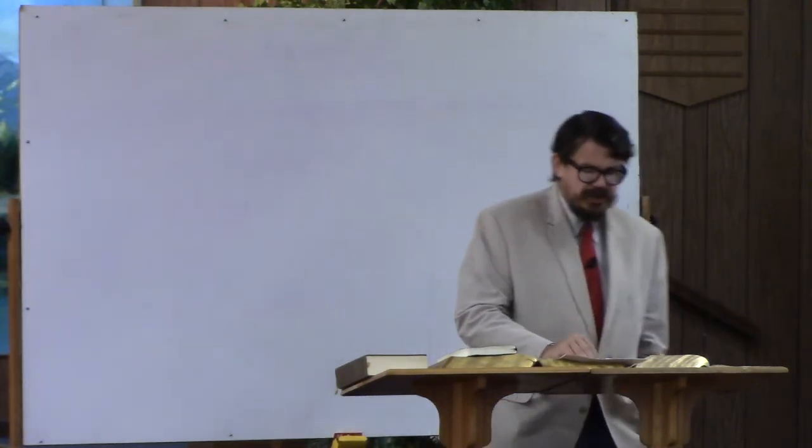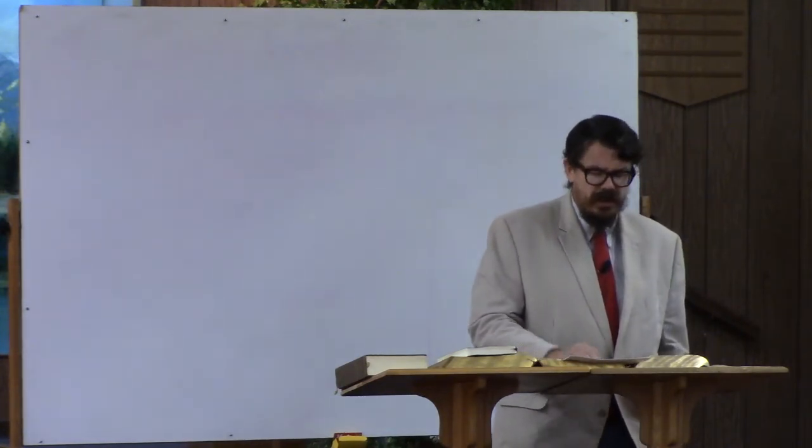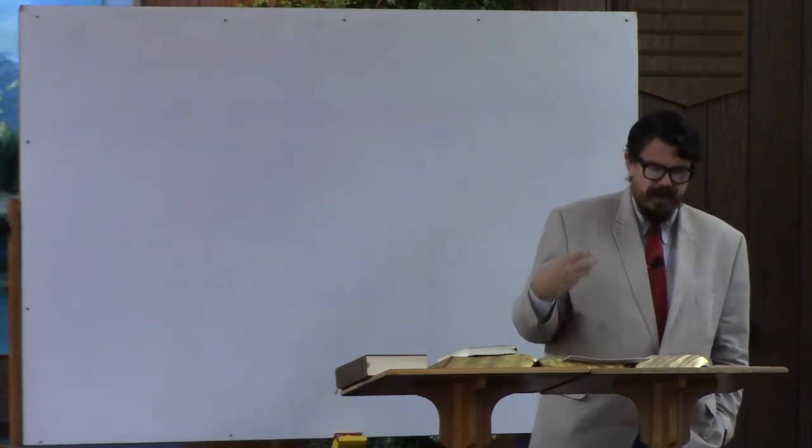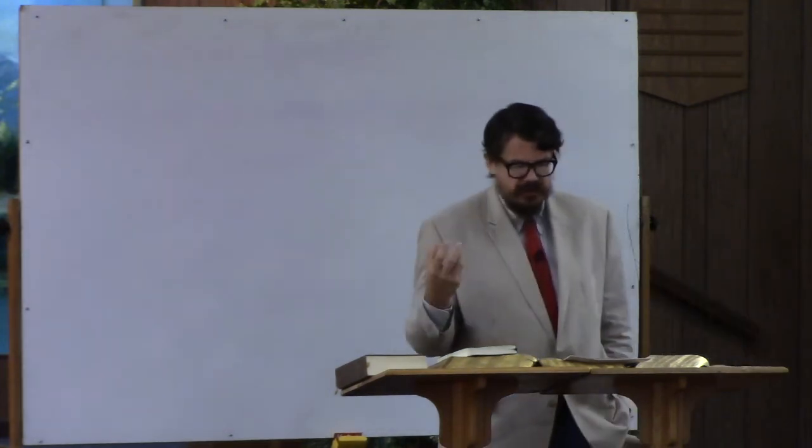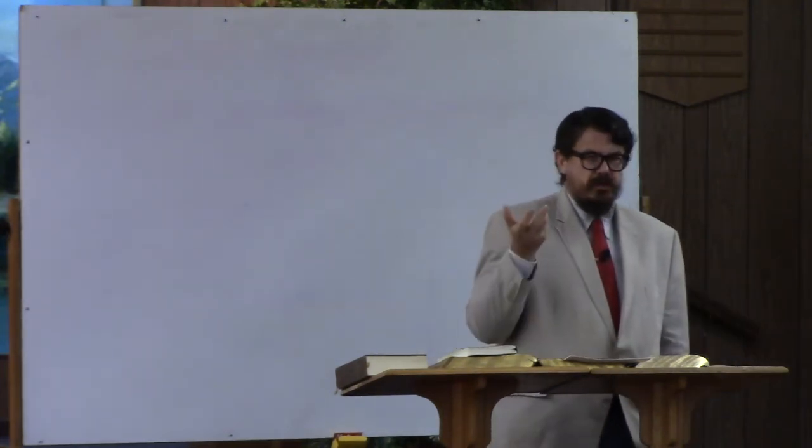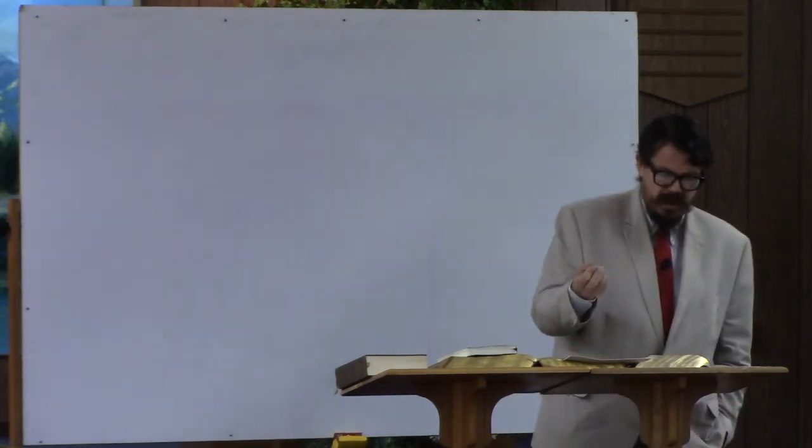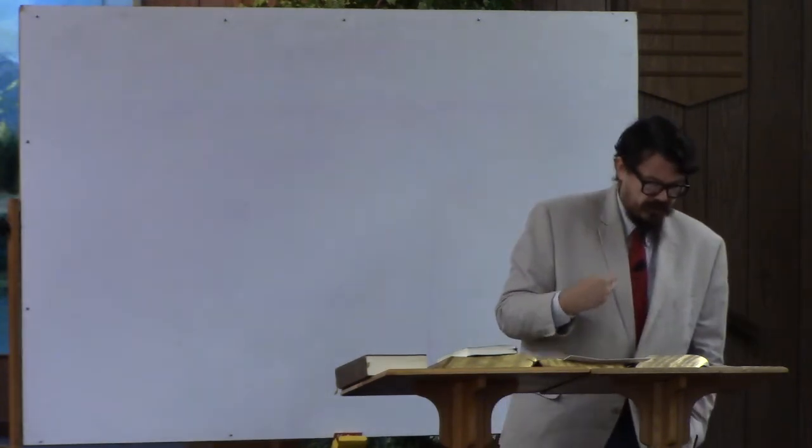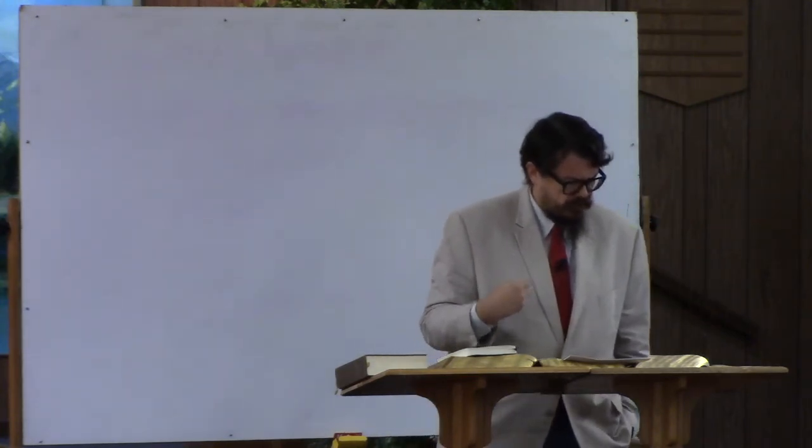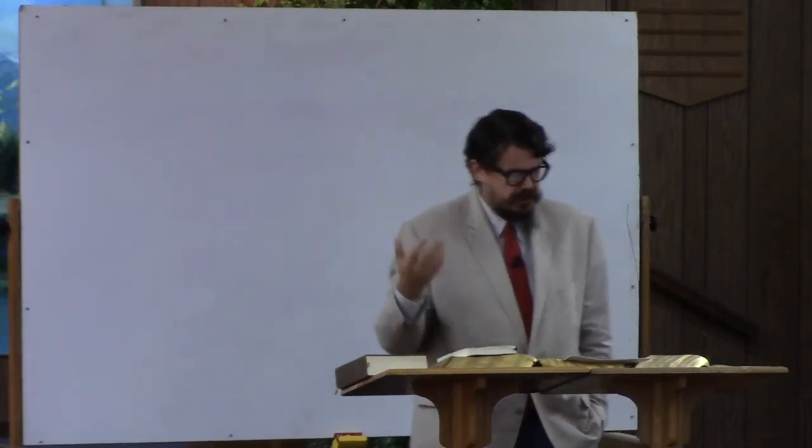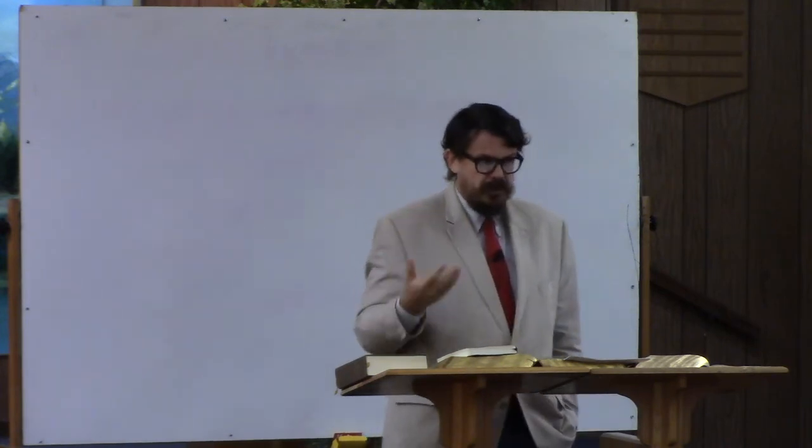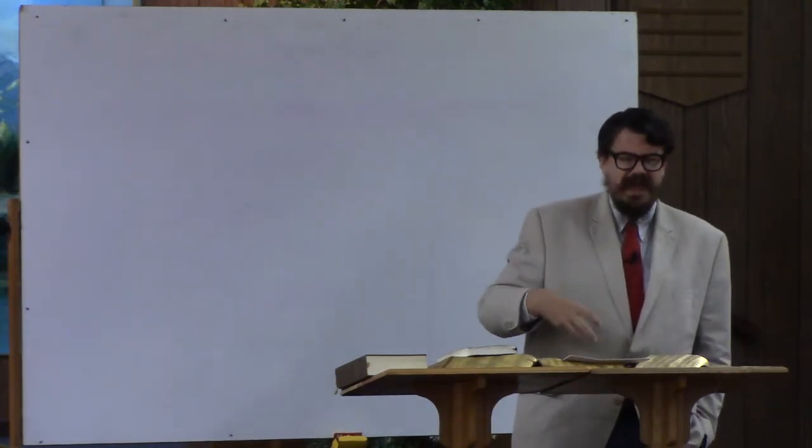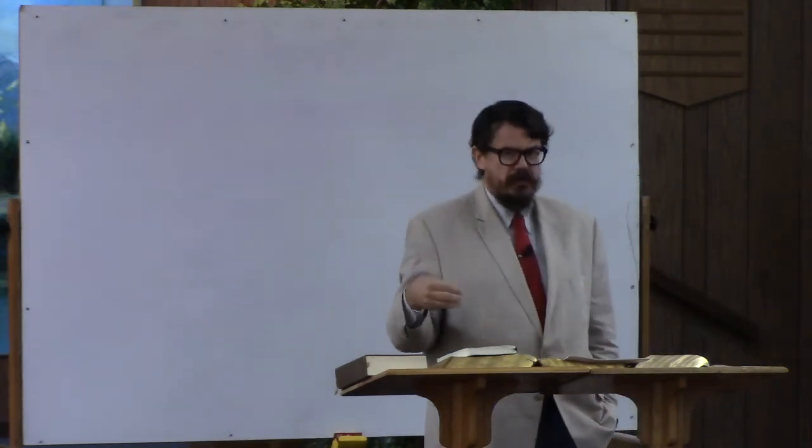So he establishes a sign, and it might strike us as kind of odd. There are a few different ways that we might take this. So Jonathan comes up with this sign that we're going to show ourselves to the Philistines, and if they say, you wait there and we'll come down to you, well then we're not going to do anything. But if they say, come up to us, then we will know that the Lord has given them into our hand. What's going on here? Does he have some kind of prophetic knowledge or is something else going on? The text doesn't clarify for us.